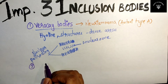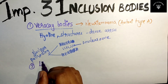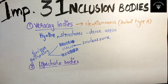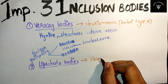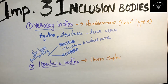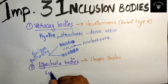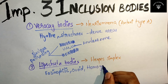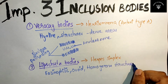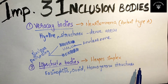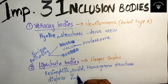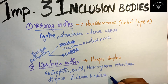The second most important inclusion body is your Lipschutz bodies. Where can you find Lipschutz bodies? They are seen in herpes simplex. Lipschutz bodies are eosinophilic, ovoid, homogeneous structures in the nucleus which displace the nucleolus and nuclear chromatin peripherally.